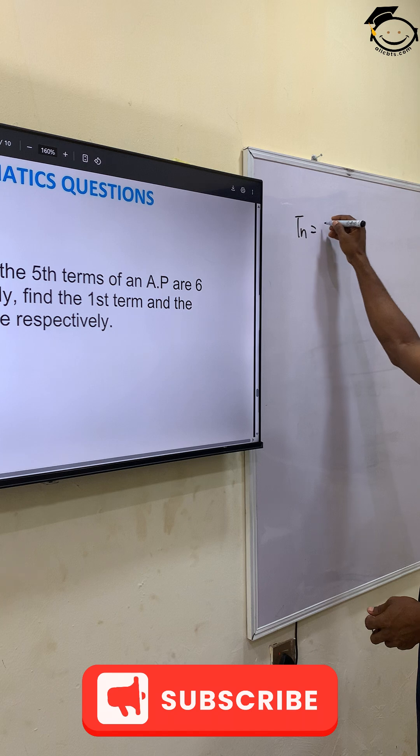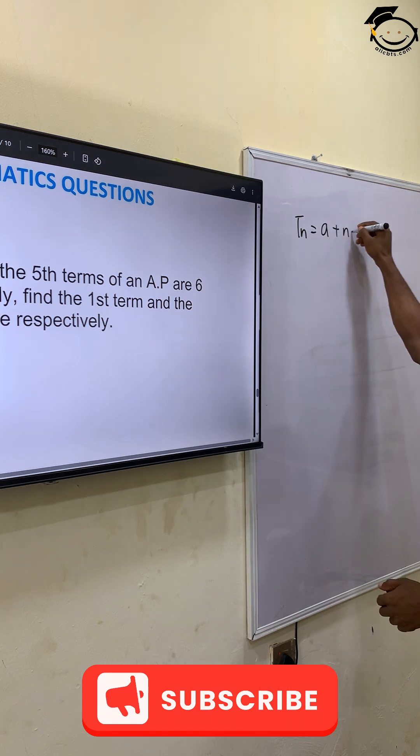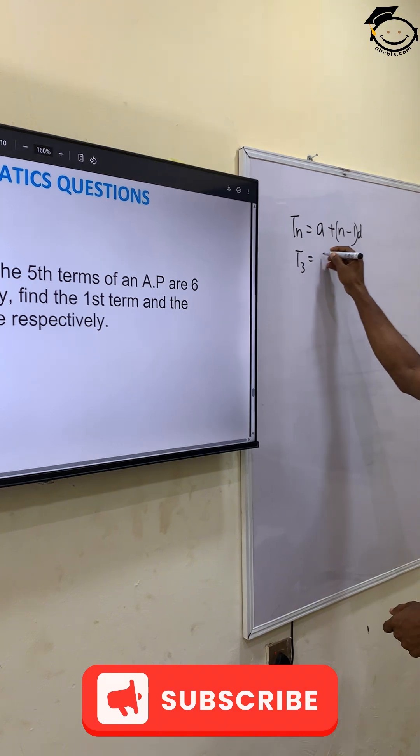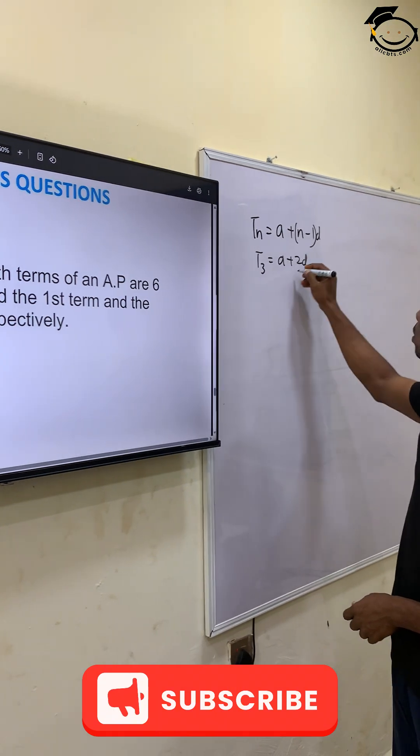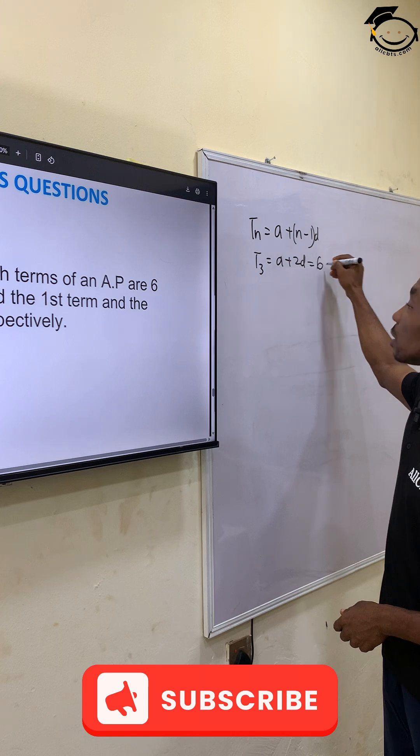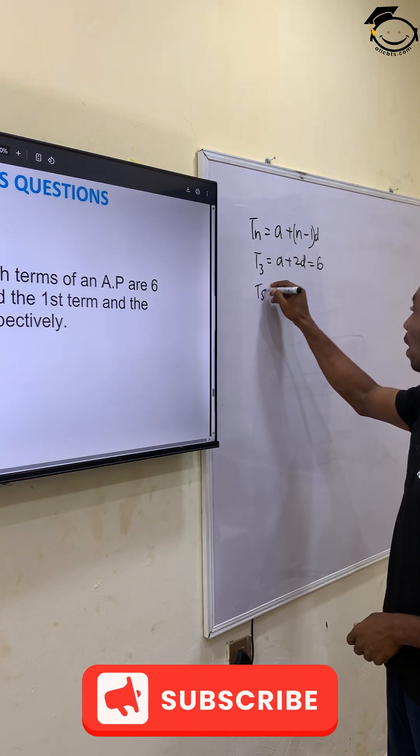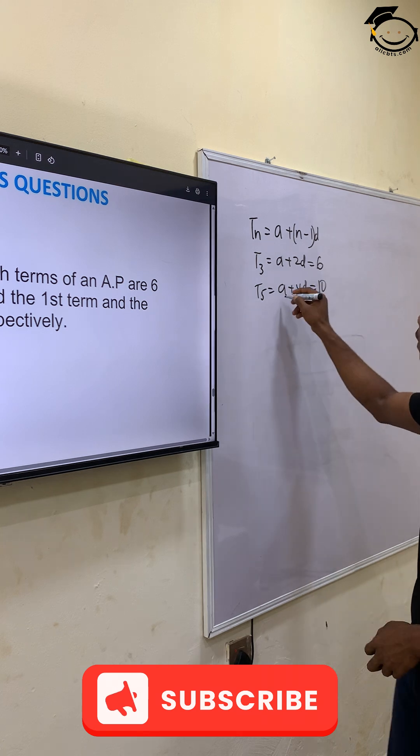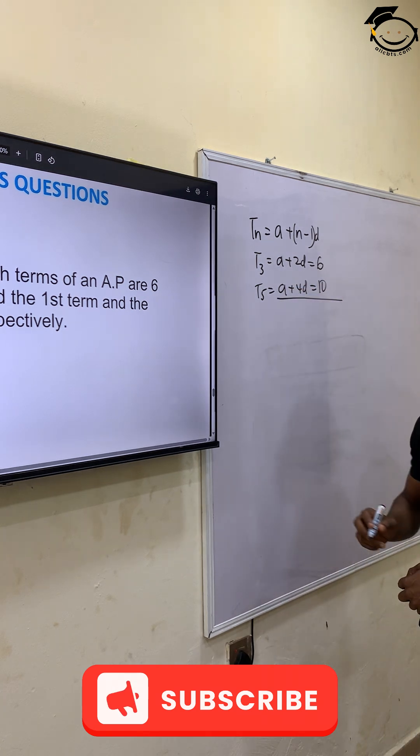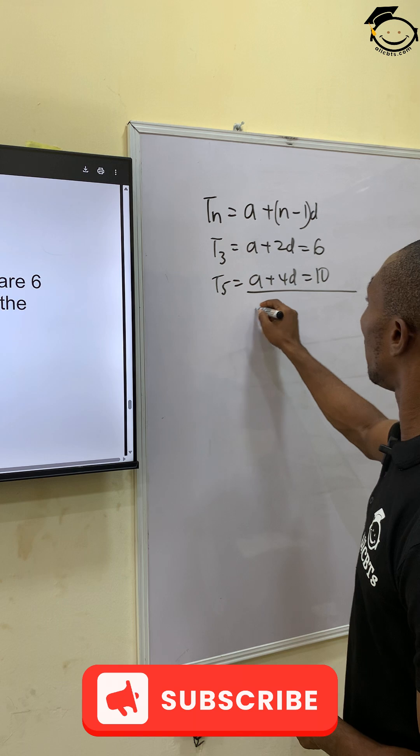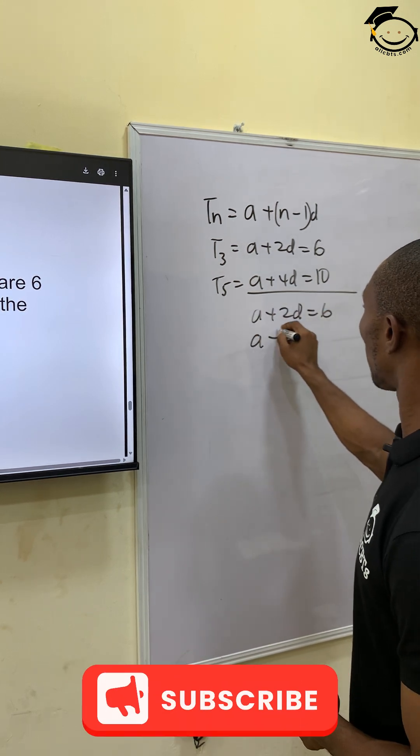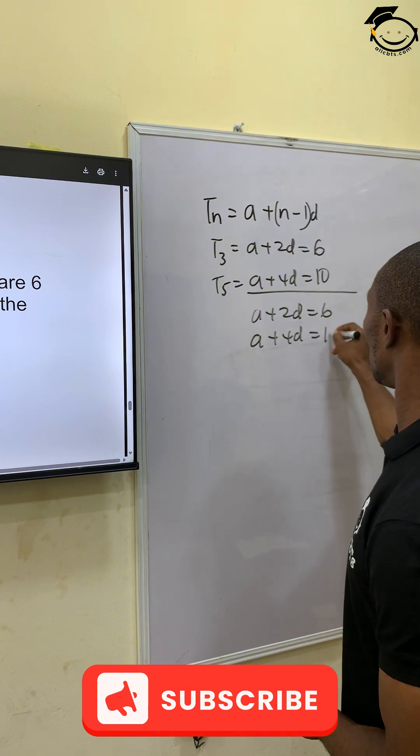We know that TN equals A plus (N minus 1)D. For T3, we have A plus 2D equals 6, and T5 equals A plus 4D equals 10. Now solving this simultaneously, we have A plus 2D equals 6 and A plus 4D equals 10.